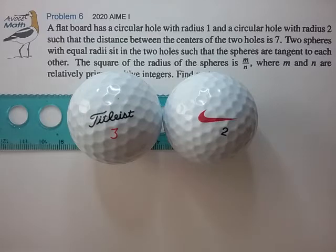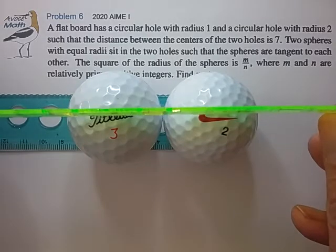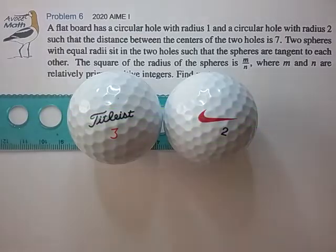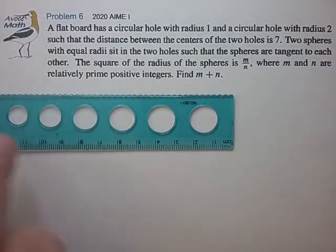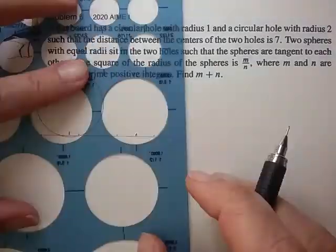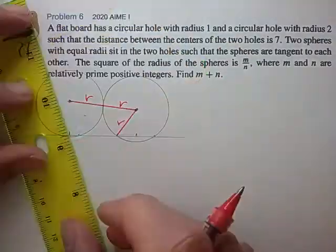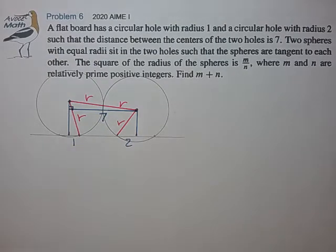So for this problem, I'm imagining that if we cut down the center of these two balls, that cross-section will contain all the points of interest. So let me try to draw that up real fast. Okay, that's a pretty good cross-section drawing.